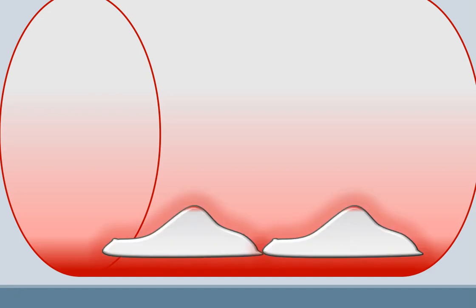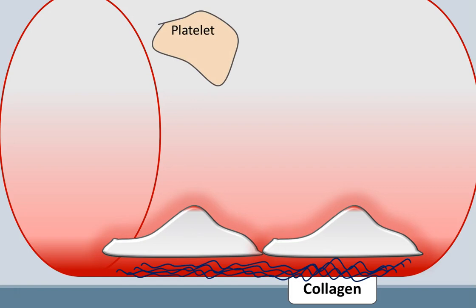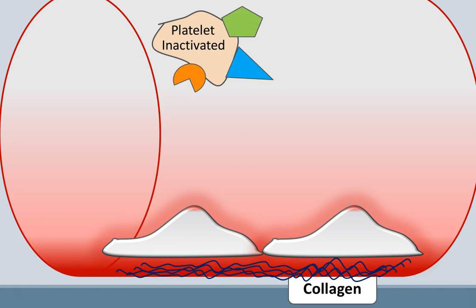Here we can see the representation of a blood vessel. Although there are many components present in the blood, in this video we will focus only on those related to Von Willebrand Disease. In addition to the blood vessel, we must also mention the endothelial cells, which are cells that line the interior surface of all of our blood vessels. Below these cells are the subendothelial collagen fibers which, as we shall see, are extremely important in this stage of blood clotting. We can also see a platelet. It is important to mention that the platelets in our blood circulation are in an inactivated stage, meaning they are not yet participating in blood clotting.